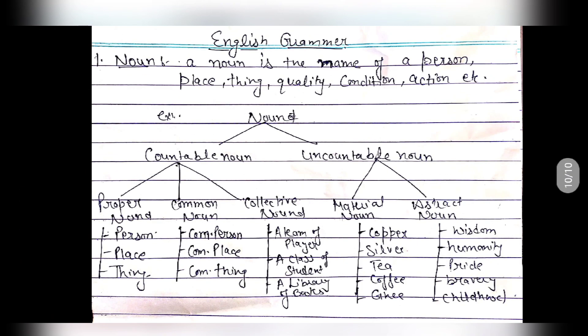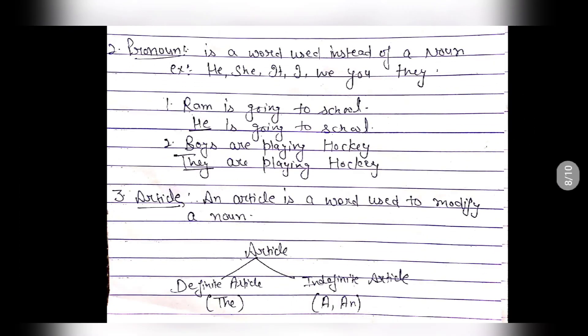Next is material noun — examples include copper, silver, tea, and coffee. Abstract noun refers to things we can feel, such as wisdom, humility, pride, and childhood. Next is pronoun. For example, 'Boys are playing' — here 'boys' is a noun, but we can replace it with 'they': 'They are playing hockey' — here 'they' is a pronoun.